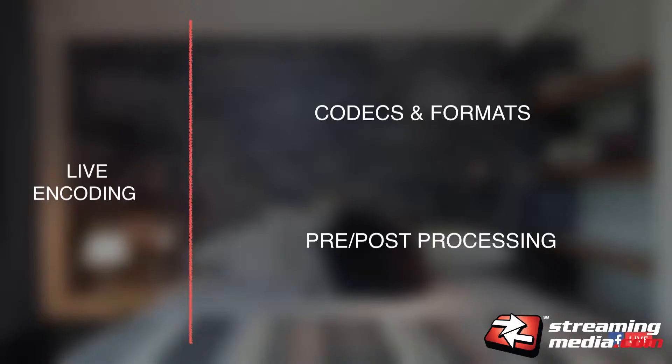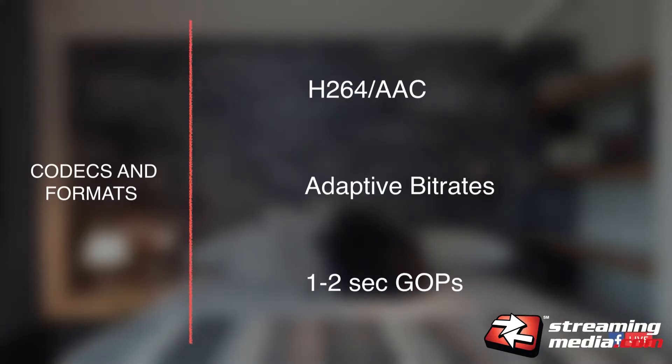Under these four pillars, we start to think about what codecs to use, what formats, and what things we do in pre- and post-processing. In terms of codecs and formats, we currently do H.264 for video for the most part, AAC for audio, adaptive bitrate encodings to adapt to different bandwidth conditions, and one- to two-second GOP sizes for live. One fun thing about Facebook is we do constant experimentation — lots of experiments running at any given time to optimize for each of these parameters. Our infrastructure team does an amazing job building an experimentation framework where we can easily launch experiments at scale.